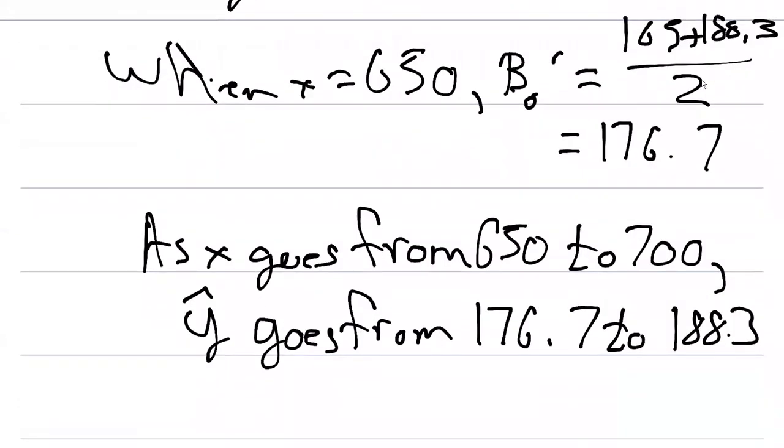So we can say that as x goes from 650 to $700 per acre, y hat goes from 176.7 to 188.3 bushels per acre.